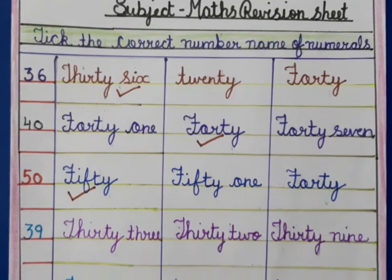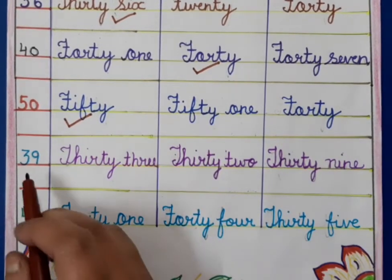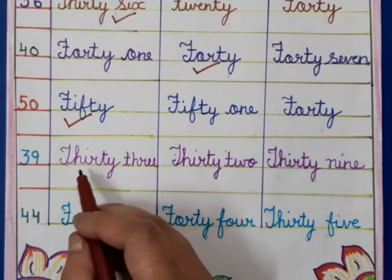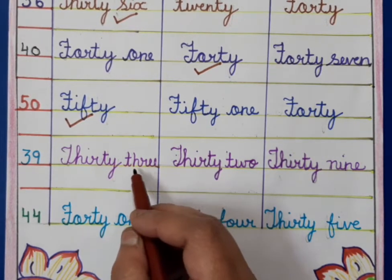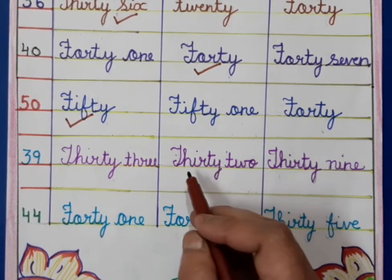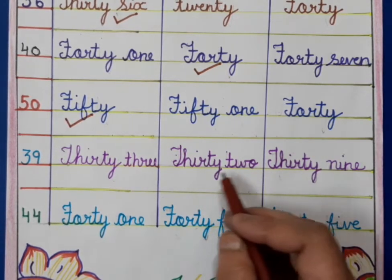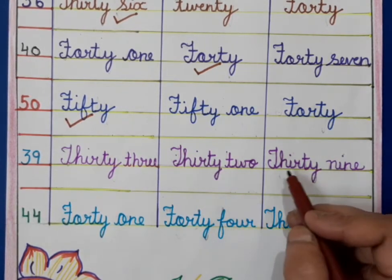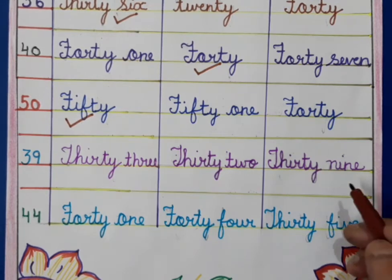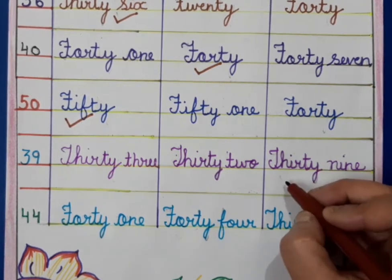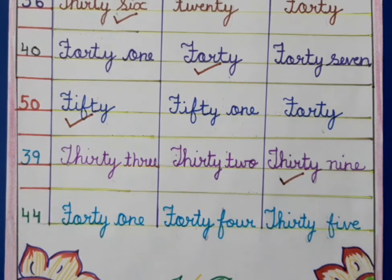Now we will move further and this is 39. The options are: THIRTY-THREE (33), THIRTY-TWO (32), and THIRTY-NINE (39). So, this is 39 — THIRTY-NINE. We found it and we will tick it like this.